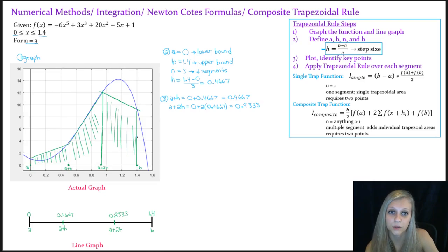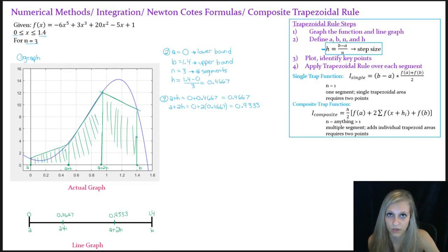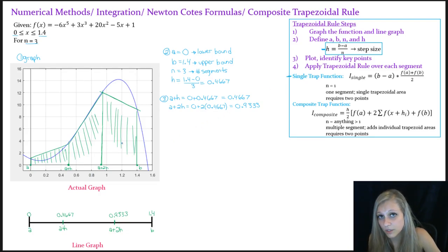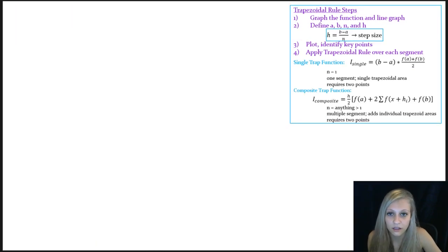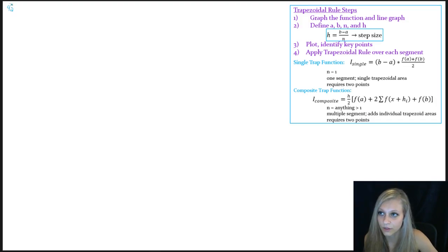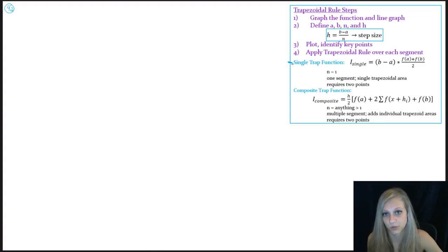Now for step 4, we're going to apply the trapezoidal rule over each segment. I'm going to do this two different ways. First, I'll use the single trapezoidal function to calculate the area of each of the three trapezoids and add them together. Then I want to show that you get the same answer using the composite trapezoidal function.